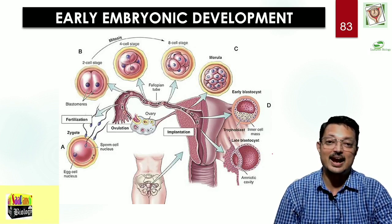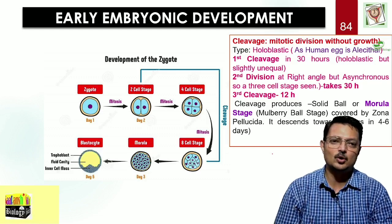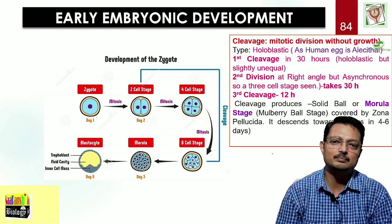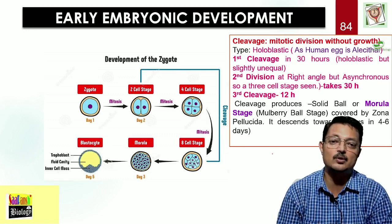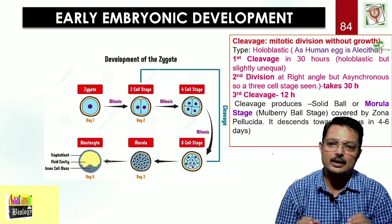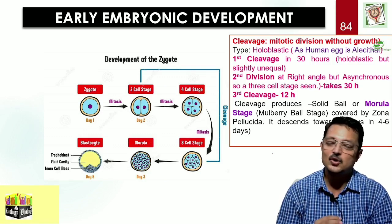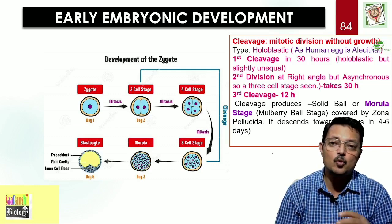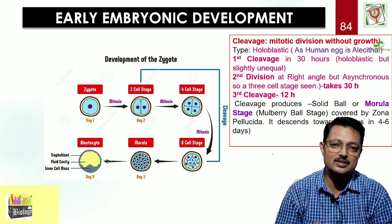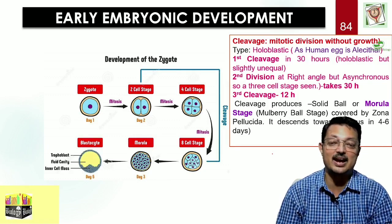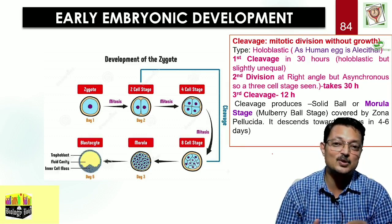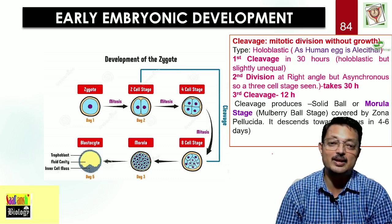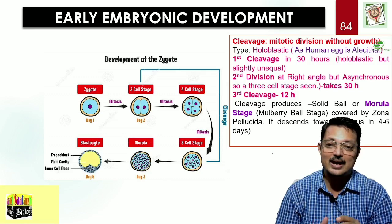The first cleavage takes around 30 hours and is vertical. The human egg is alecithal — there is practically no yolk — so the division is holoblastic, meaning the whole ovum divides into 2, 4, 8, and 16 cells. In contrast, in birds and reptiles with high yolk content, only a specific portion divides — called meroblastic. In humans, cleavage is holoblastic. One cell divides slightly earlier than the other due to size difference, producing an intermediate three-cell stage before completing to four.